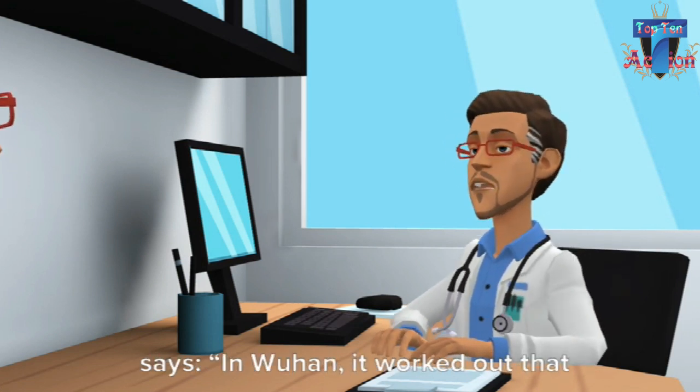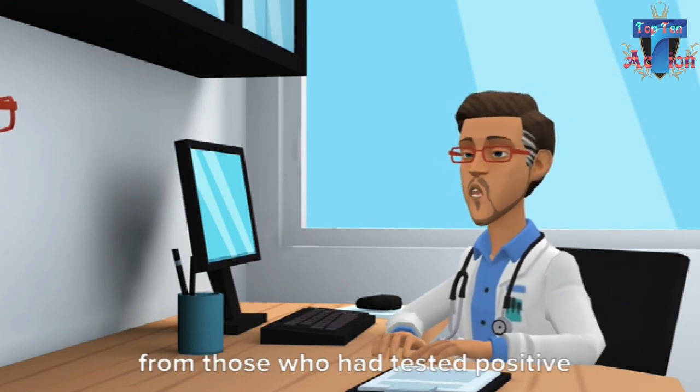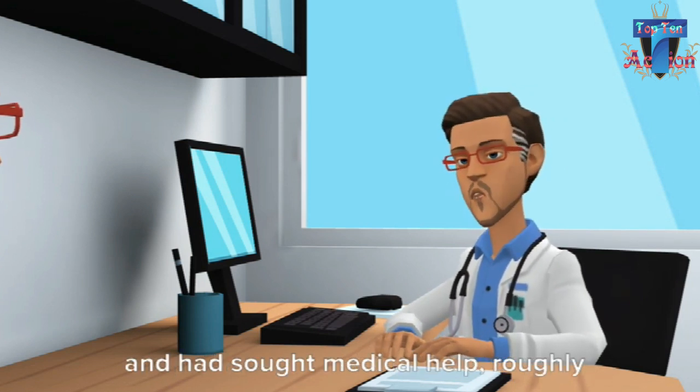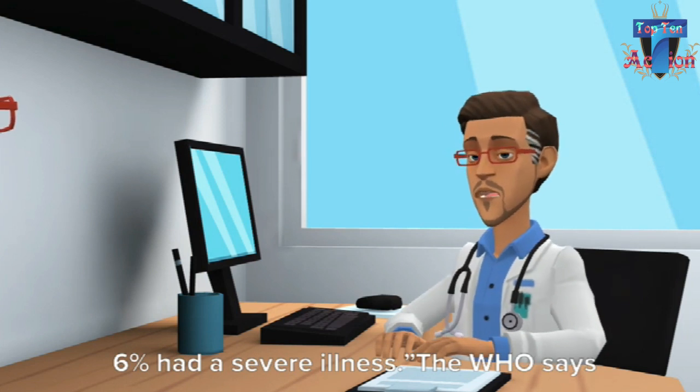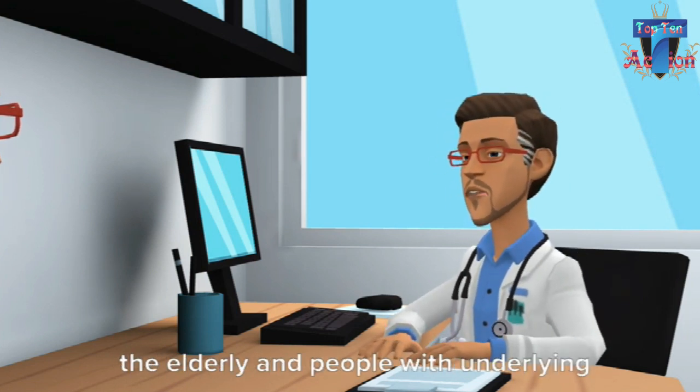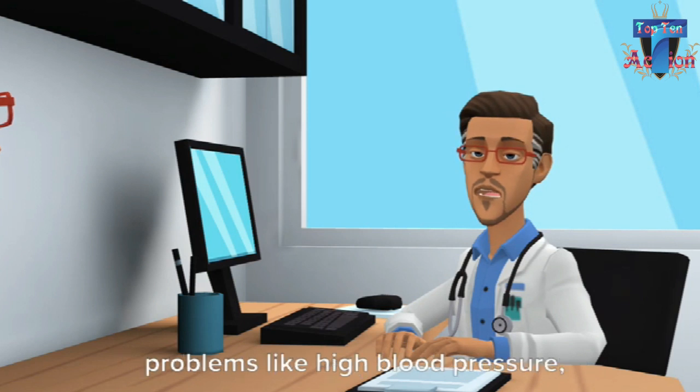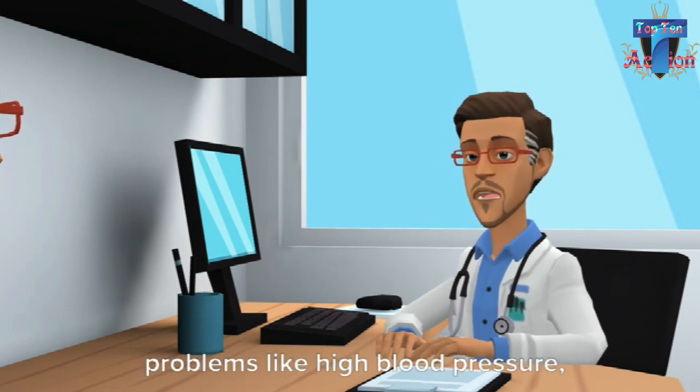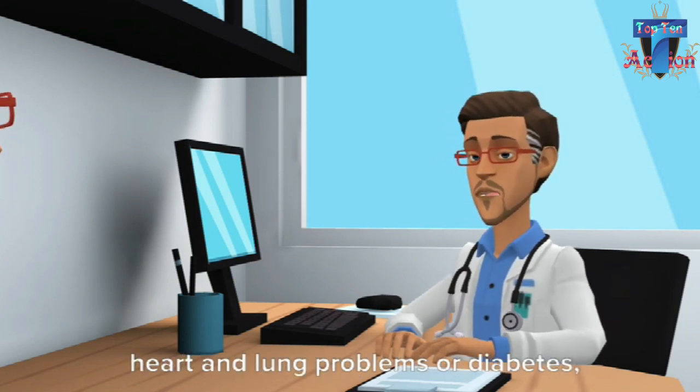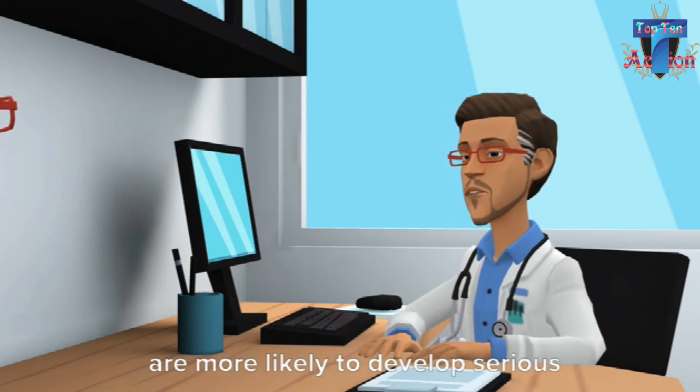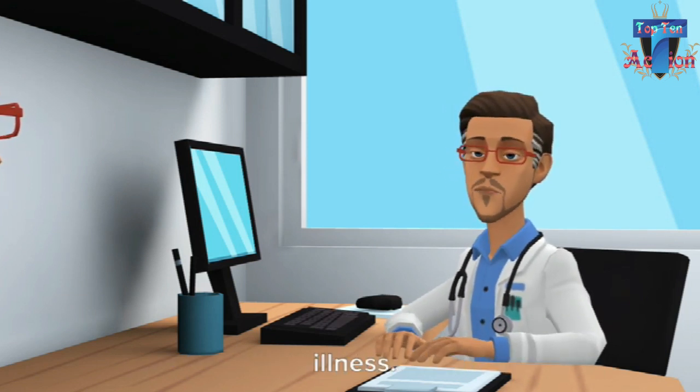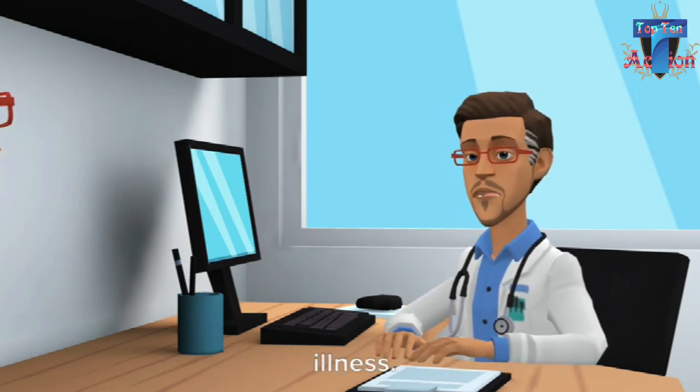In Wuhan, it worked out that from those who had tested positive and had sought medical help, roughly 6% had a severe illness. The WHO says the elderly and people with underlying problems like high blood pressure, heart and lung problems, or diabetes are more likely to develop serious illness.